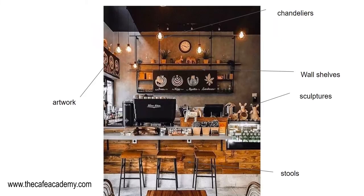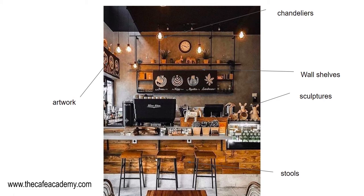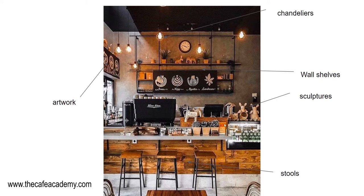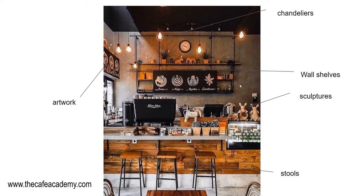On our first slide we have a nice coffee shop interior design. We can see artwork on the side, wall shelves, chandeliers, nice lighting, and wooden stools in a very nice brownish color. There are also some sculptures — they look like rabbits — on the side. The coffee bar is well organized. This is something you can definitely use if you're starting a coffee shop.